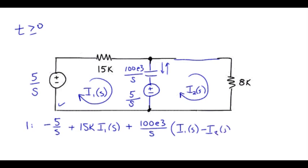I2 of S. Then we have a voltage source, bump into the positive sign first, so that's 5 over S. Set that equal to zero.